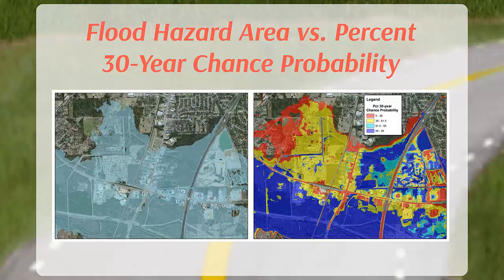Like the other grids, this grid continues to emphasize that knowing whether you are in or out of the floodplain boundary is only the beginning of understanding relative flood risk, and provides a visual example that is easily understood.